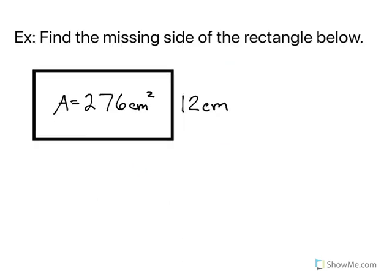Let's do an example. Find the missing side of the rectangle below. We are trying to find the missing length, knowing that the width is 12 centimeters and that the area is 276 centimeters squared.